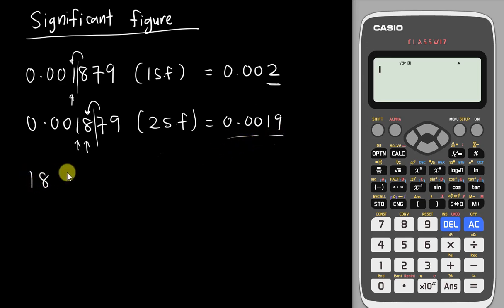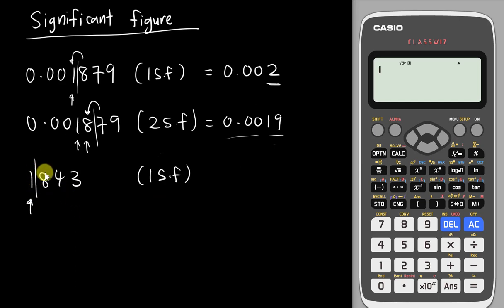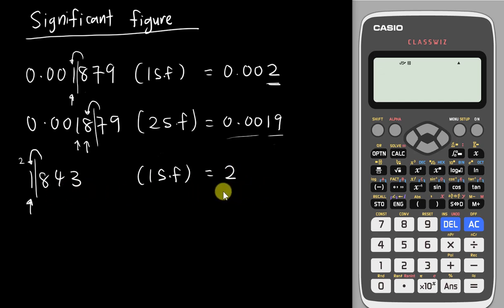Now if I have 1843 and round off to 1 Significant Figure: I count the first digit, which is 1, draw a line, and since 8 is bigger than 5, I add 1 to the front — 1 plus 1 gives 2. But I shouldn't stop there, because 2 is very different from 1843. All the numbers at the back need to become zeros, giving 2000. And 2000 is very close to 1843, so that is the correct answer.